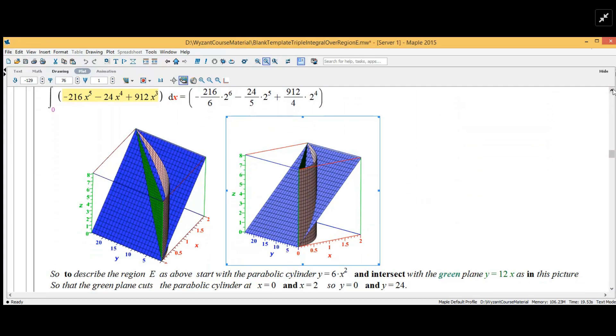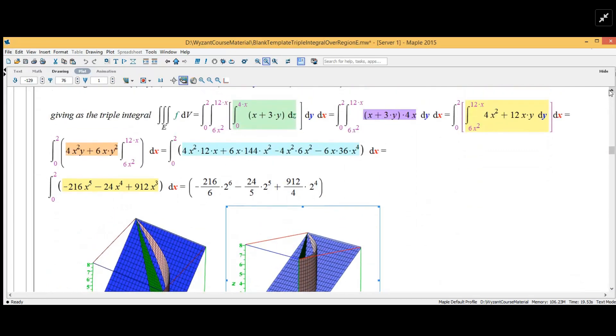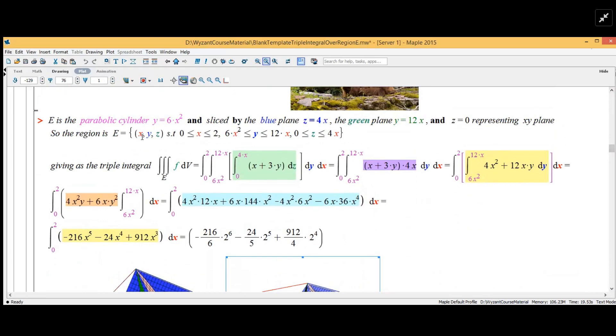The region is the set of x, y, and z such that x is between 0 and 2, y is between 6x squared and 12x, and z is between 0 and 4x. Our triple integral is going to be the outermost with x equals 0 to 2, the middle one y between 6x squared and 12x, and the inner one between 0 and 4x with respect to dz.